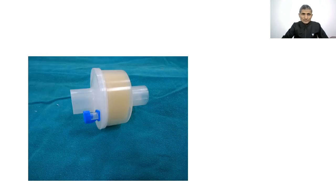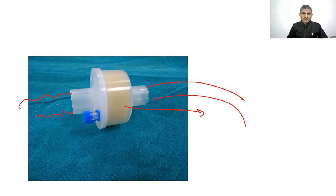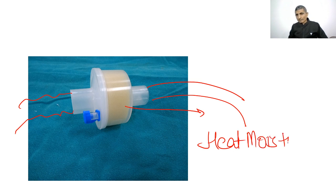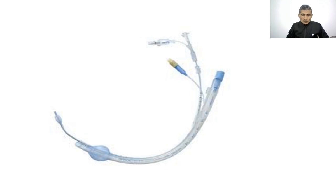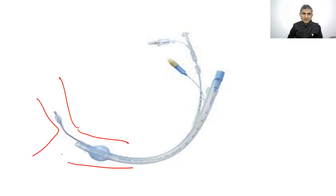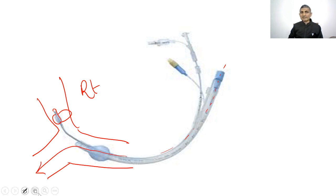This is a bronchus blocker tube used for lung segregation in thoracic surgery. The blocker is inserted into one bronchus and the balloon is inflated, isolating that lung. Only the other lung is ventilated. When double lumen tubes cannot be used, a bronchus blocker tube is used instead.